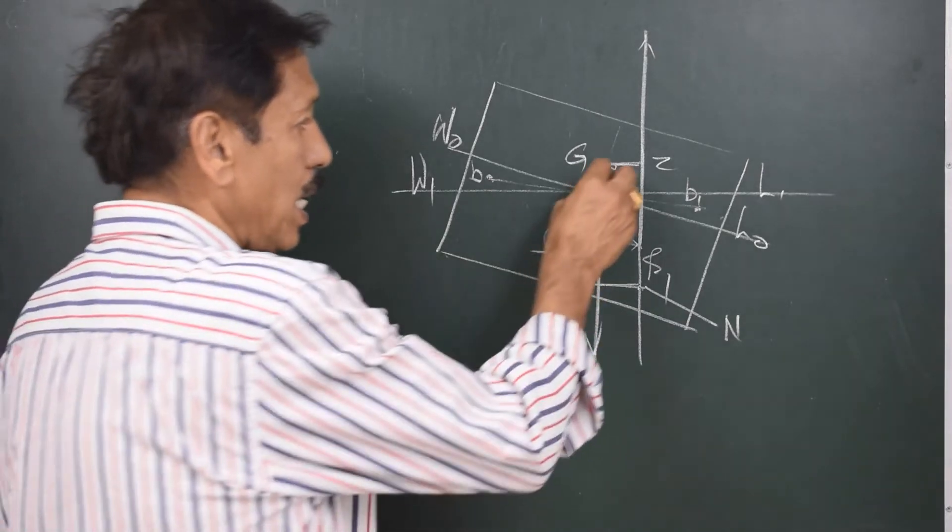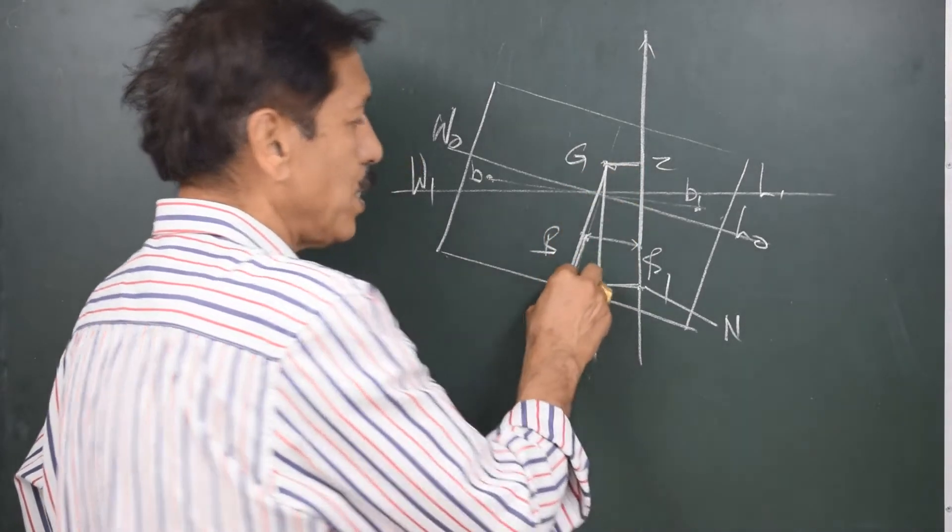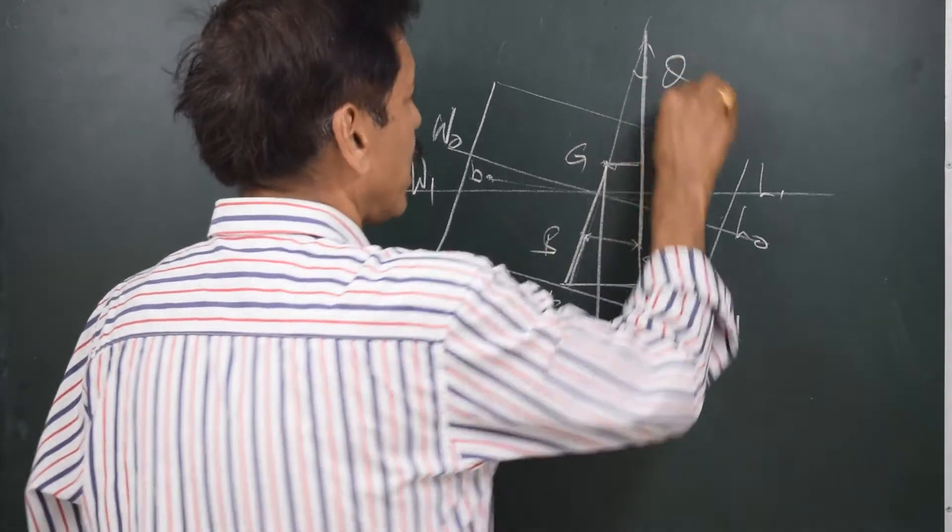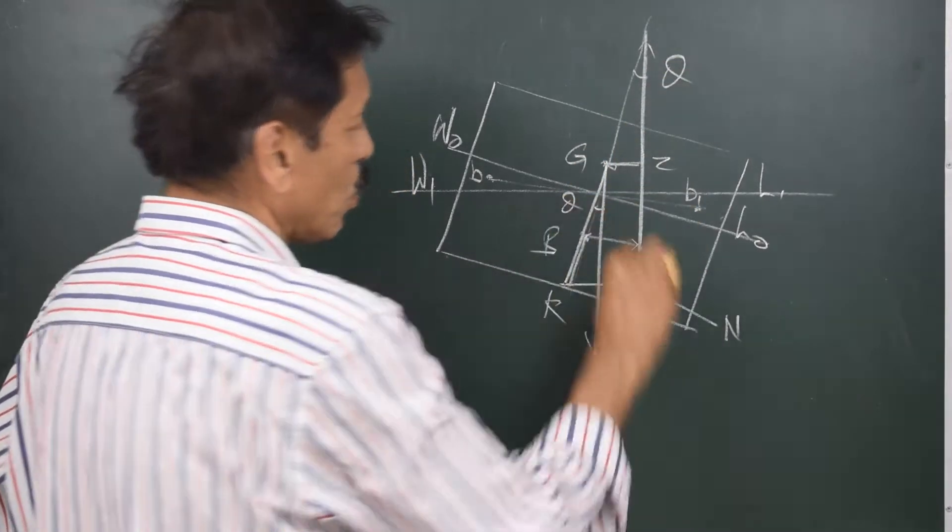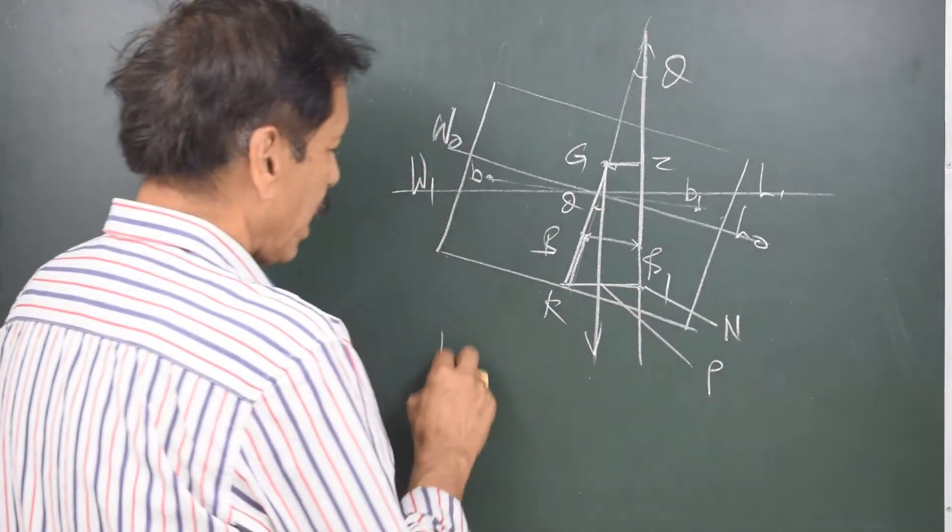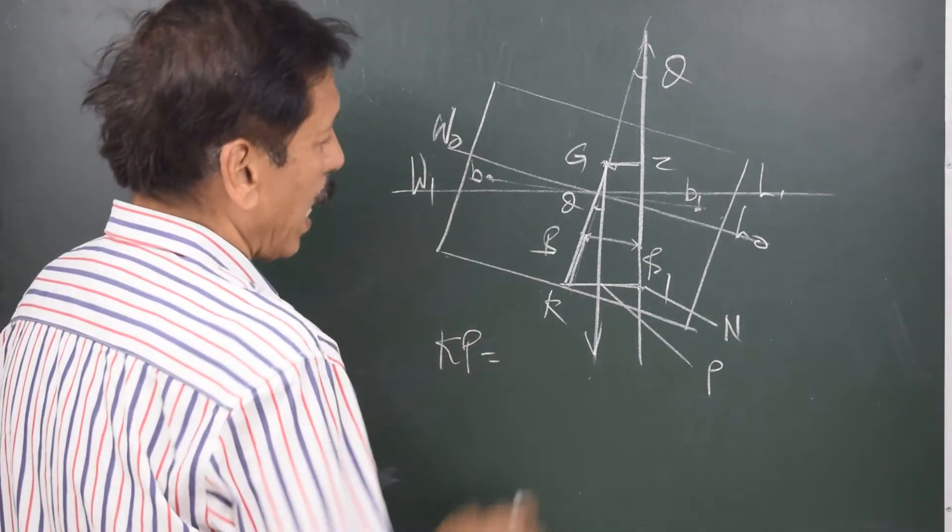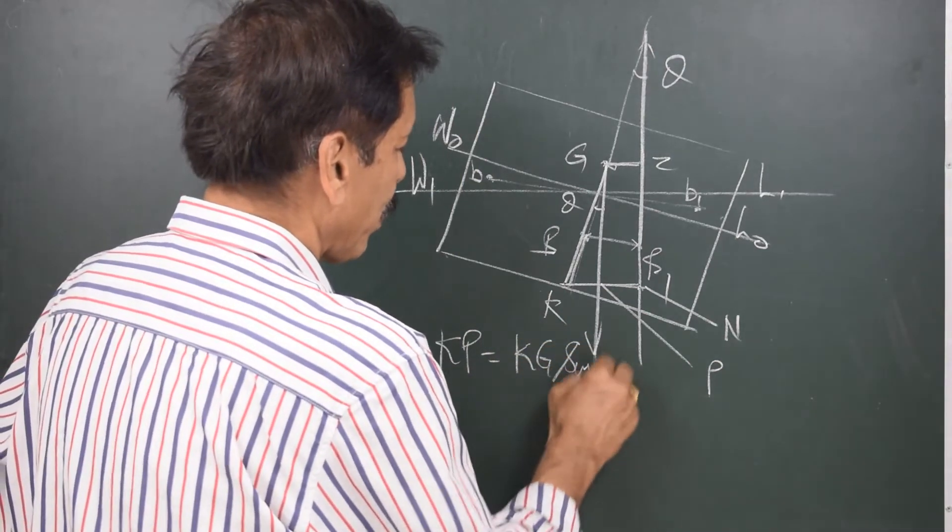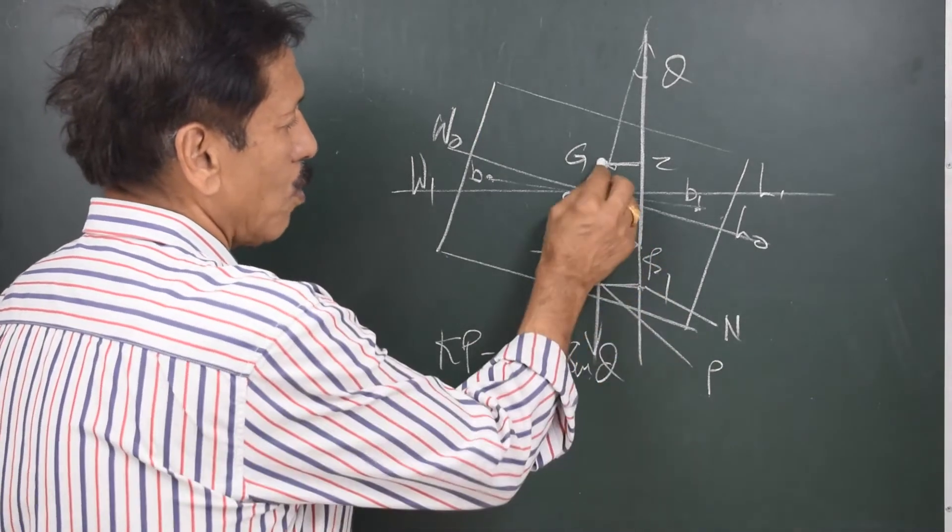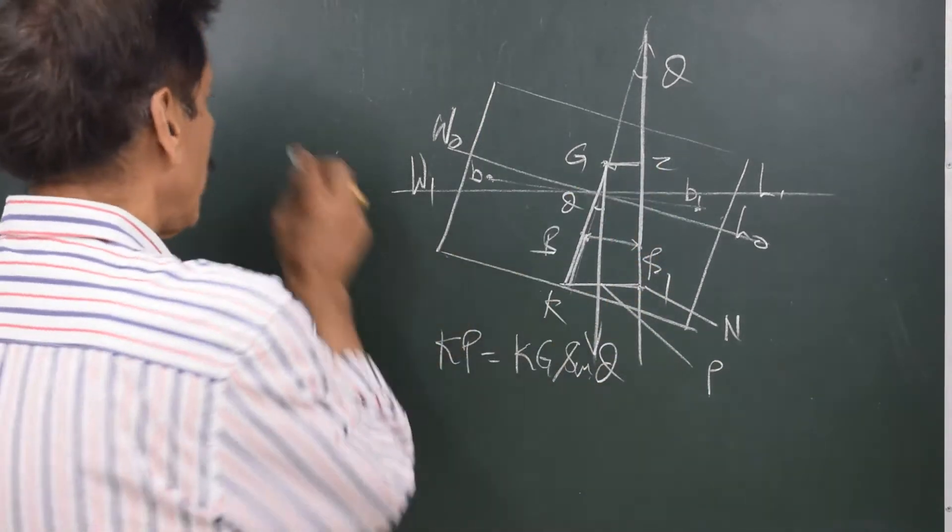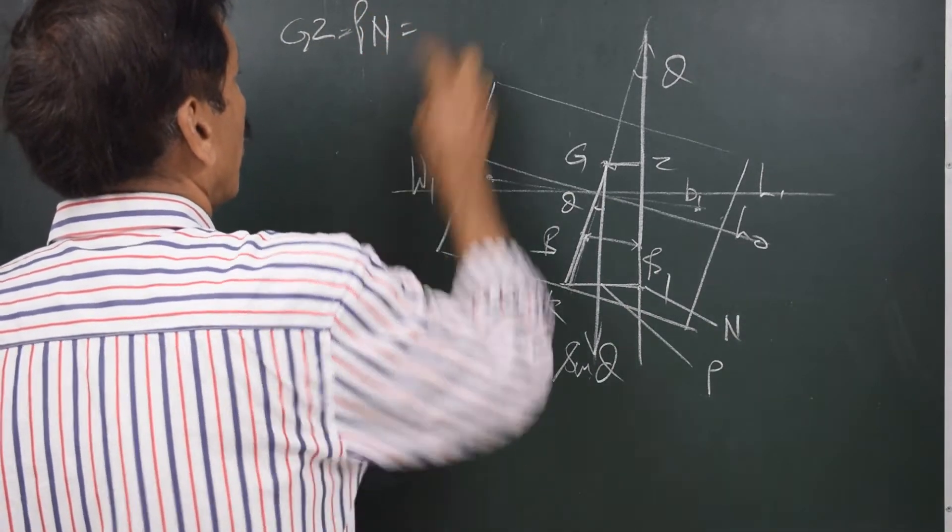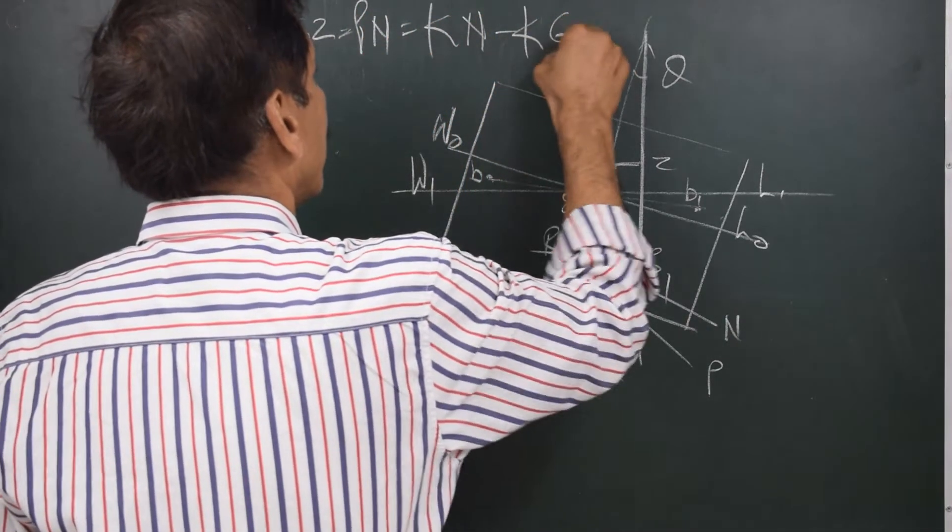But we generally have the knowledge about KG. If we consider this angle, this angle is theta, so is this angle also theta. If I call this point as P, then KP can be considered as KG sin theta. And in this diagram you can see PN is equal to GZ. So GZ which is equal to PN is equal to KN minus KG sin theta.